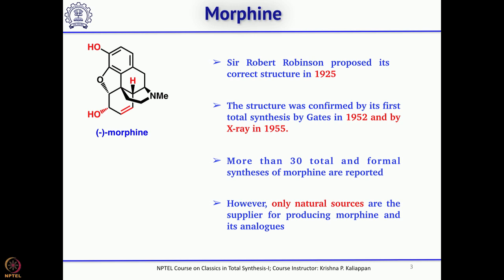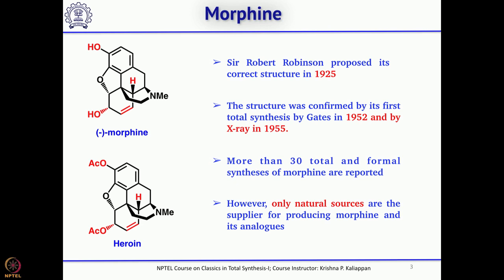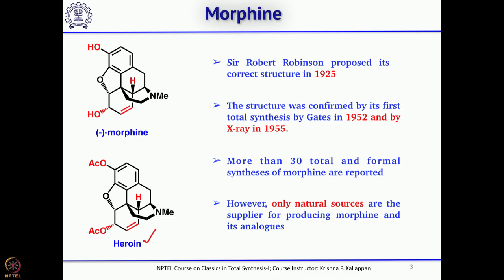Since morphine is a well-known pain reliever, people started making several analogues. One of the infamous analogues is diacetylmorphine, which has the unique name heroin. This particular infamous molecule can be easily obtained by simple acetylation of morphine with acetic anhydride. Acetic anhydride is a controlled substance — when you have to use it you must follow certain guidelines, because the conversion of morphine to heroin can be done in a single step.